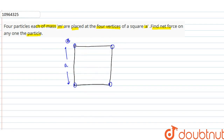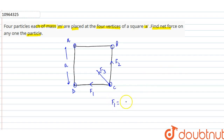The point masses are A, B, C and D. D will attract C with force F1, B will attract C with force F2, and A will attract C with force F3. F1 is equal to gravitational constant times mass of C (M) times mass of D (M), so Gm² divided by distance squared, which is A². So F1 = Gm²/A².